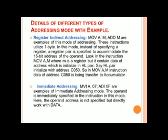That means if we use the MOV A, M instruction, the data at address C050H is transferred to the accumulator. In this way we can indirectly move the data of a specified register to the accumulator, which is why it is called register indirect addressing.